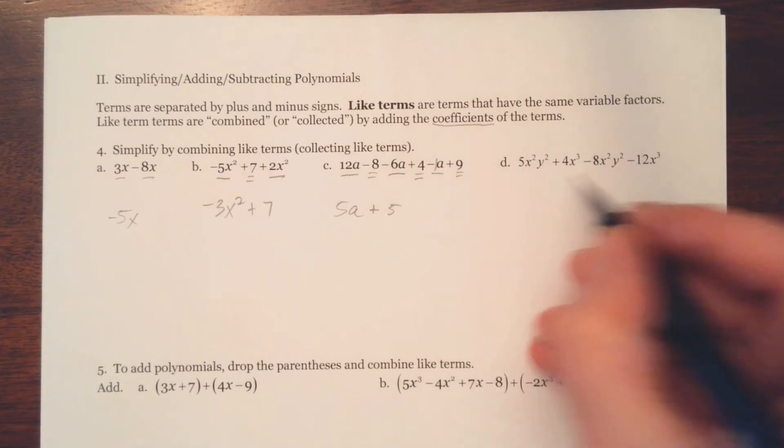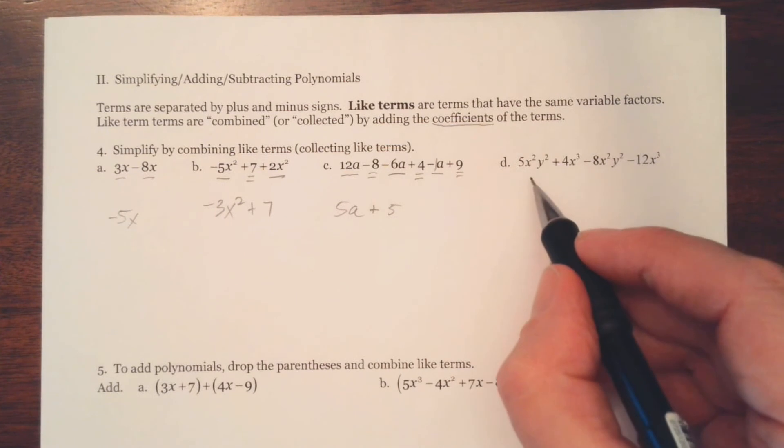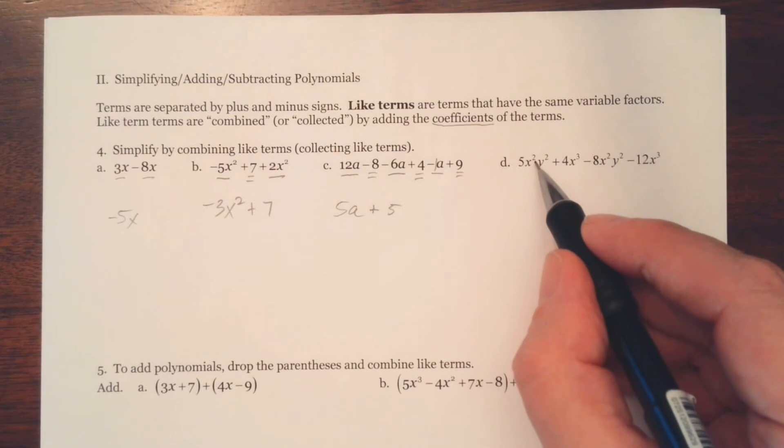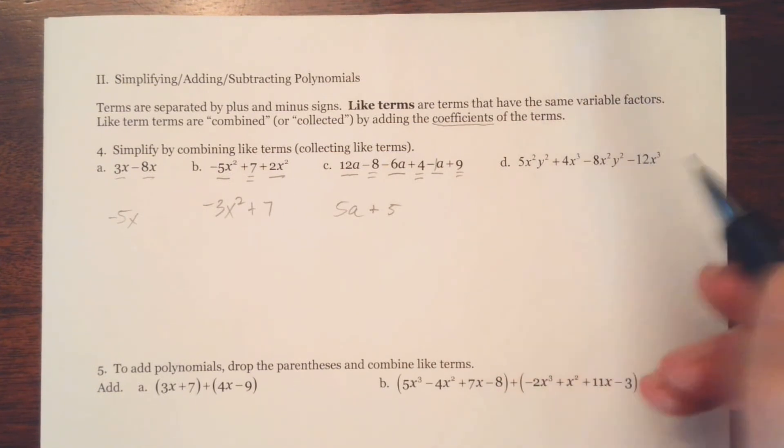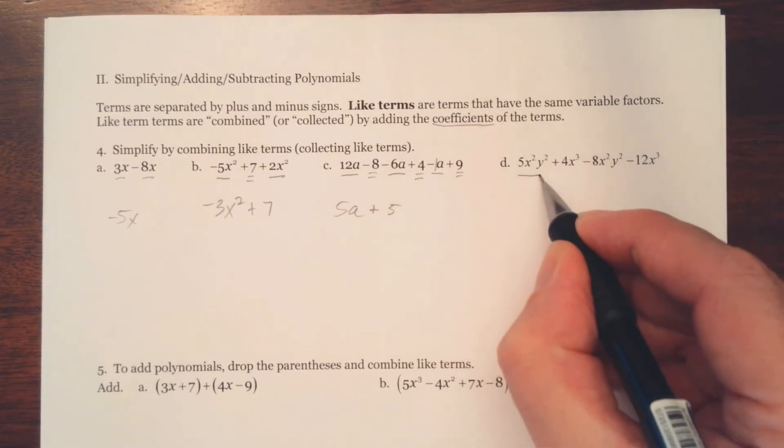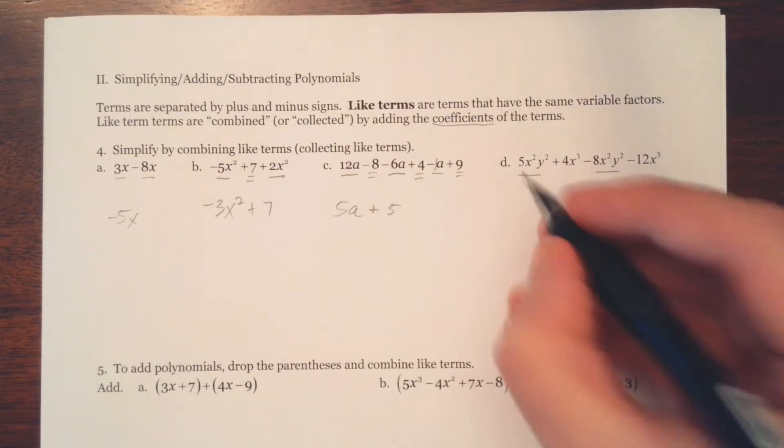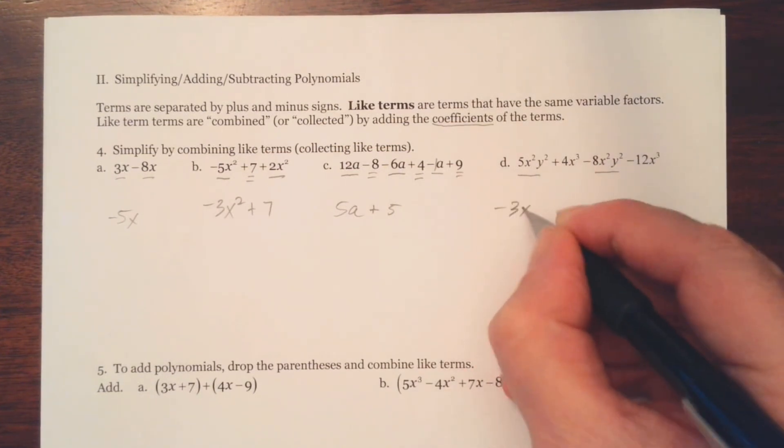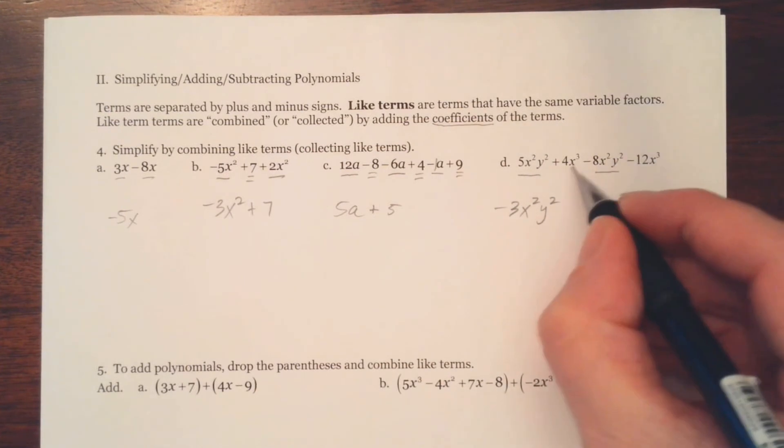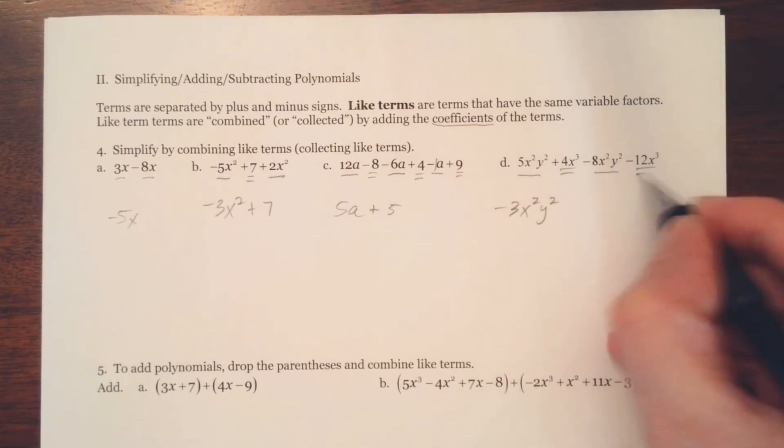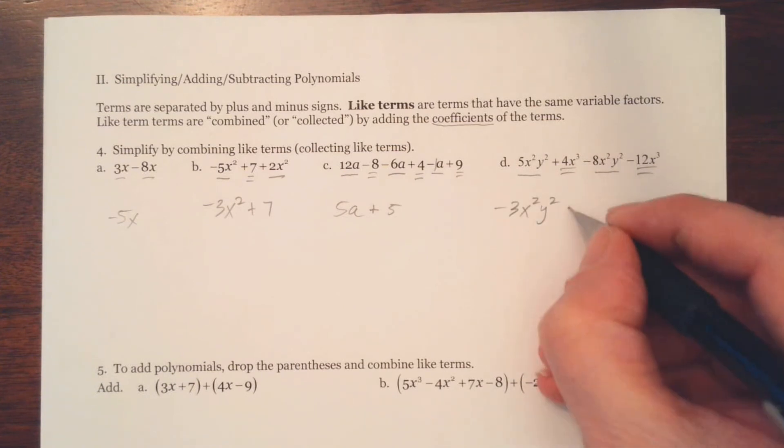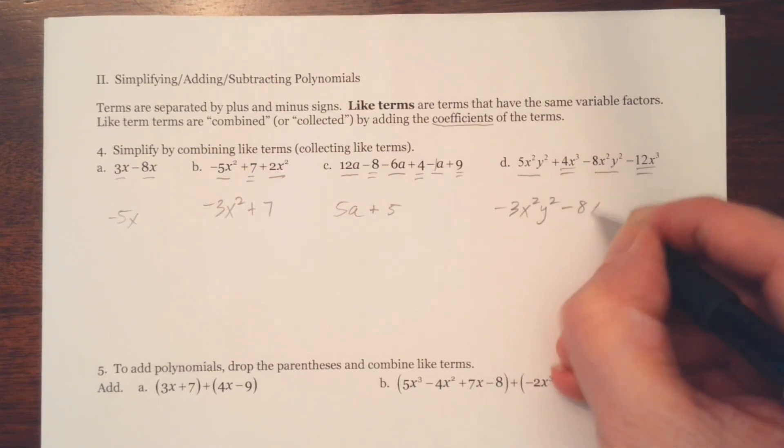Alright, this last one. Notice here we have a polynomial in 2 variables. Now we didn't discuss this, but in a case like this, the degree of this term would be found by adding the exponents here. So 2 plus 2 is 4. So the degree of this term is 4. What we really care about is the like terms. Notice these are like terms. 5 and negative 8 is negative 3. So negative 3x squared y squared. And then we do have some x cubed terms. 4 and negative 12 is negative 8. We'll write minus 8x cubed.